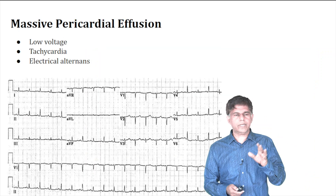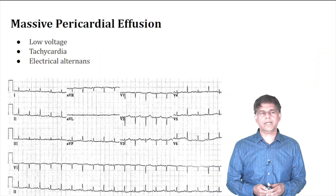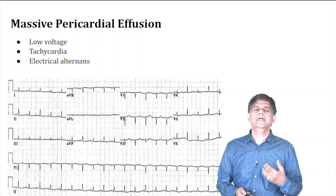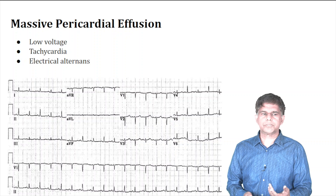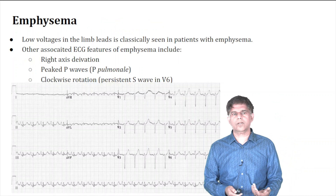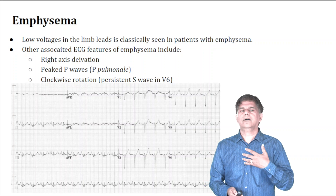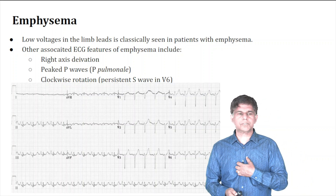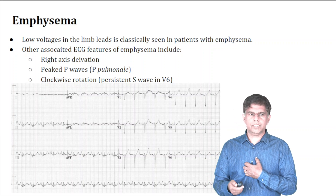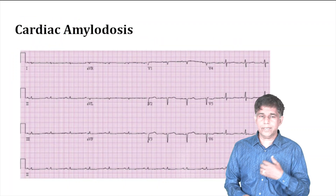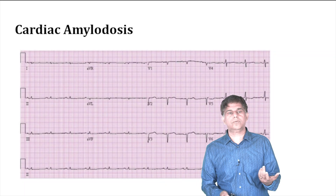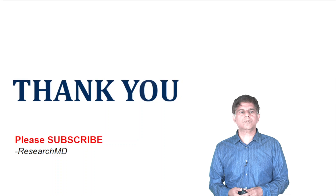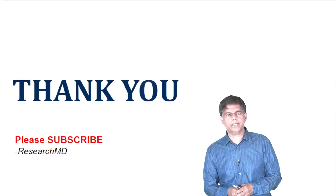In massive pericardial effusion, you can see low voltage, tachycardia, and electrical alternans on the EKG. In emphysema, low voltage occurs because of the air sitting between the electrodes and the heart. Cardiac amyloidosis can also produce low voltage, as shown in the accompanying image. These are the key references and findings. Thank you for watching — we'll be back with another presentation soon.